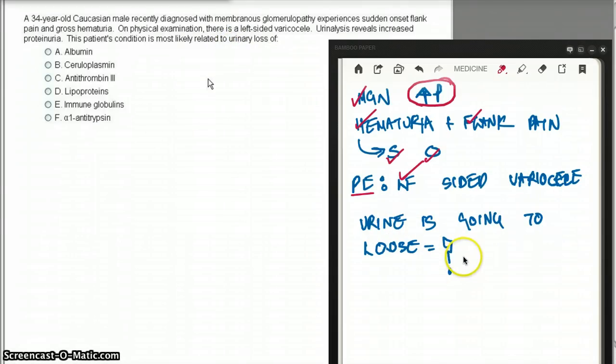This is a tricky question because we know that this patient has MGN, which is a nephrotic syndrome. So you might think we might lose protein or fat.